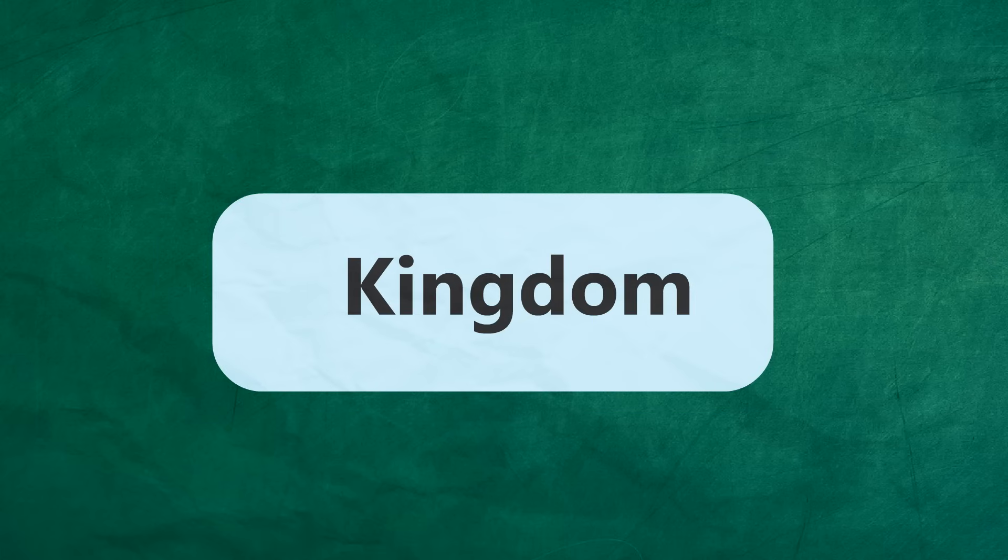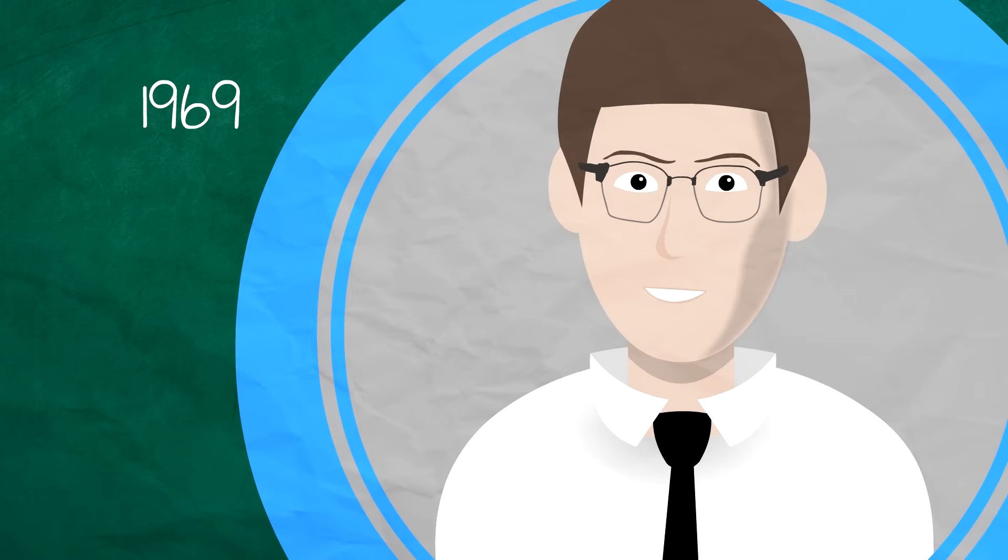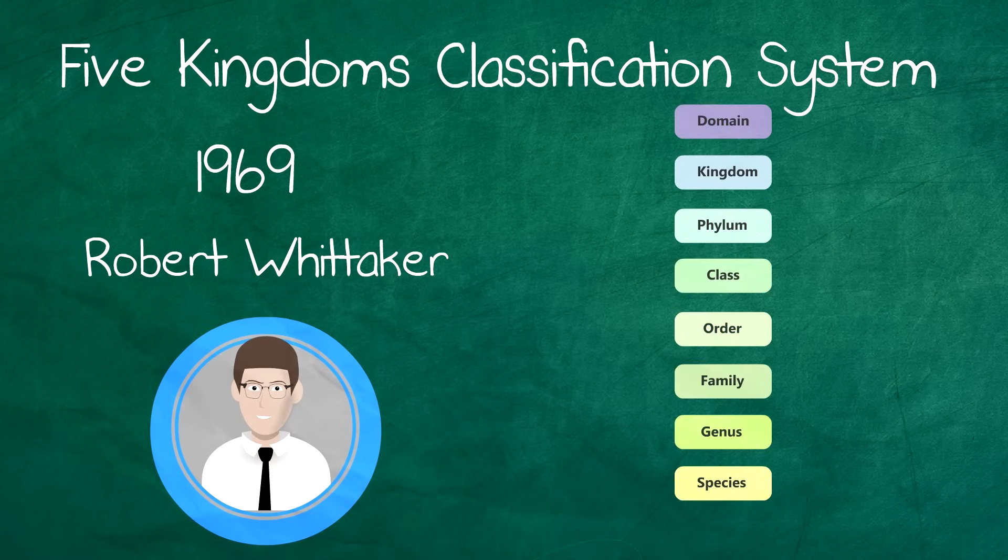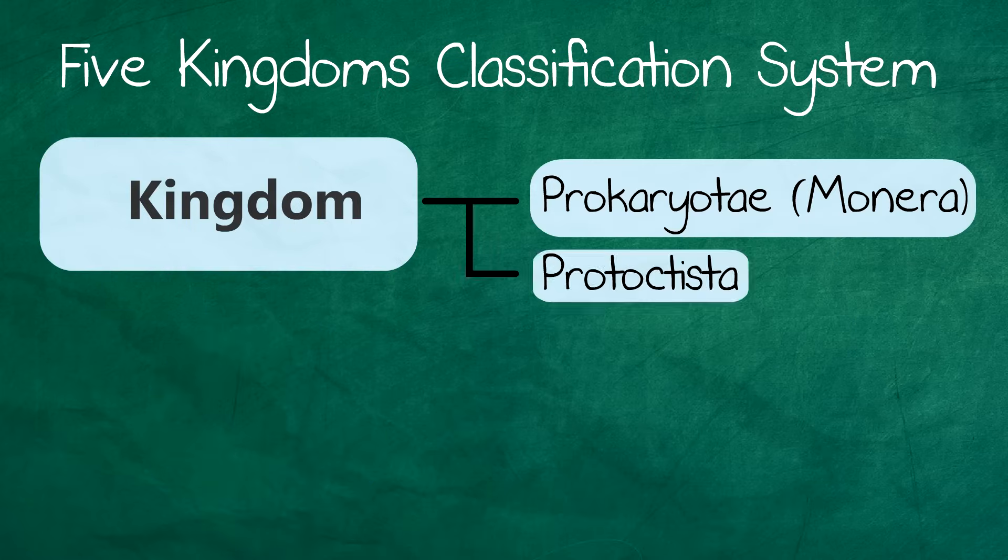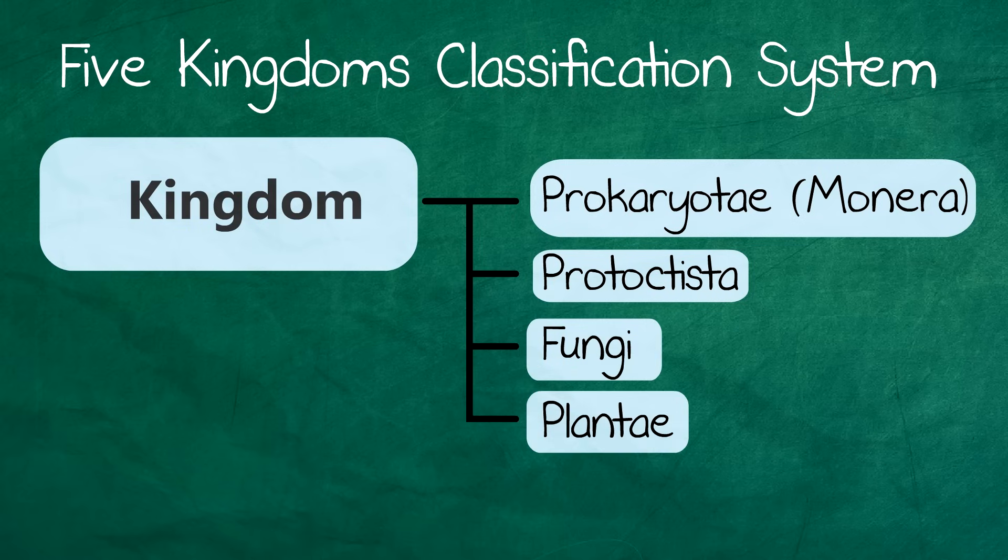So now looking at how kingdoms are broken down. In 1969, an American plant ecologist called Robert Whittaker introduced a five kingdoms classification system with the following five kingdoms: Prokaryota, Protoctista, Fungi, Plantae, and Animalia, which was mainly based upon differences in nutrition.